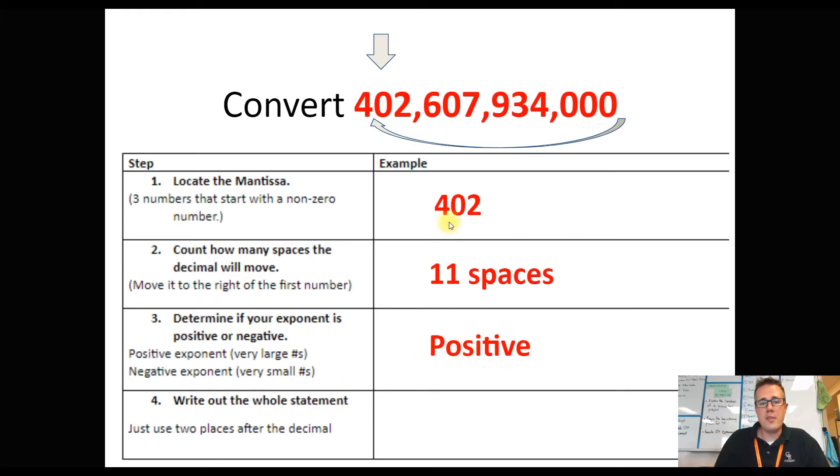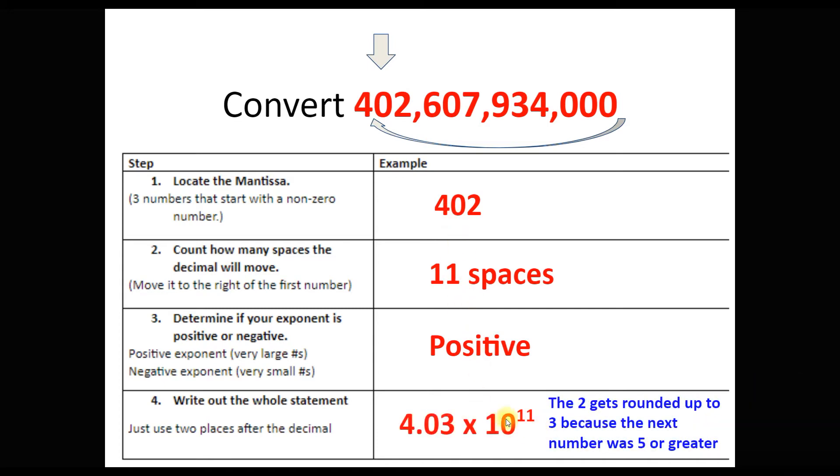Now we write the whole thing out. We start with our mantissa with 4.02, and we put times 10, because everything is times 10 for this class, and the exponent is 11. So think about what this tells us. It's a shorter way to basically round your really big number and write it in a smaller way.